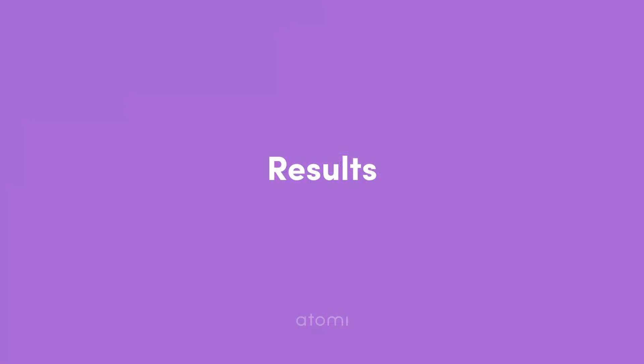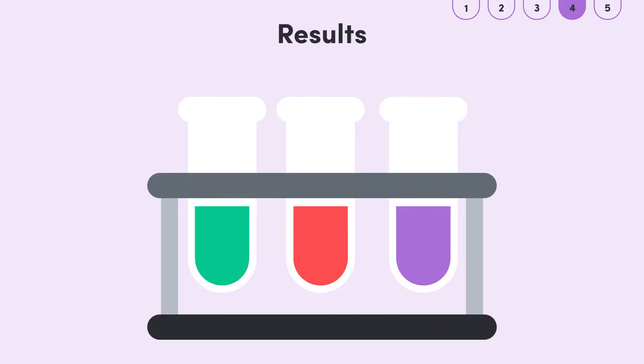But what would our results be from testing these substances with our red cabbage indicator? Well, the test tube with the indicator and HCl would be red. Meanwhile, the test tube with the indicator and water would be purple. And finally, the test tube with sodium hydroxide and the indicator would be green.